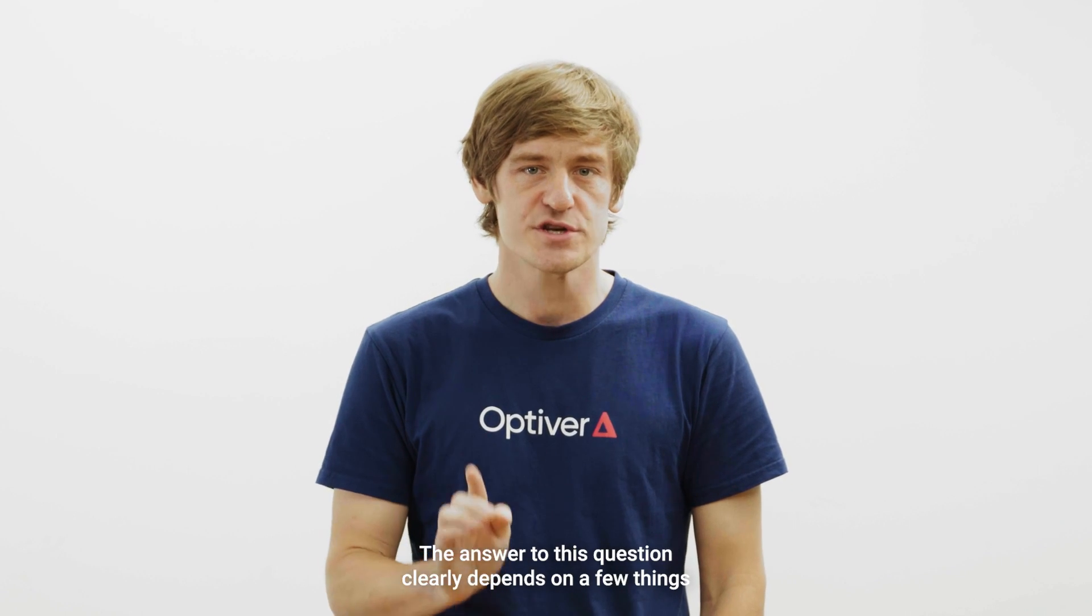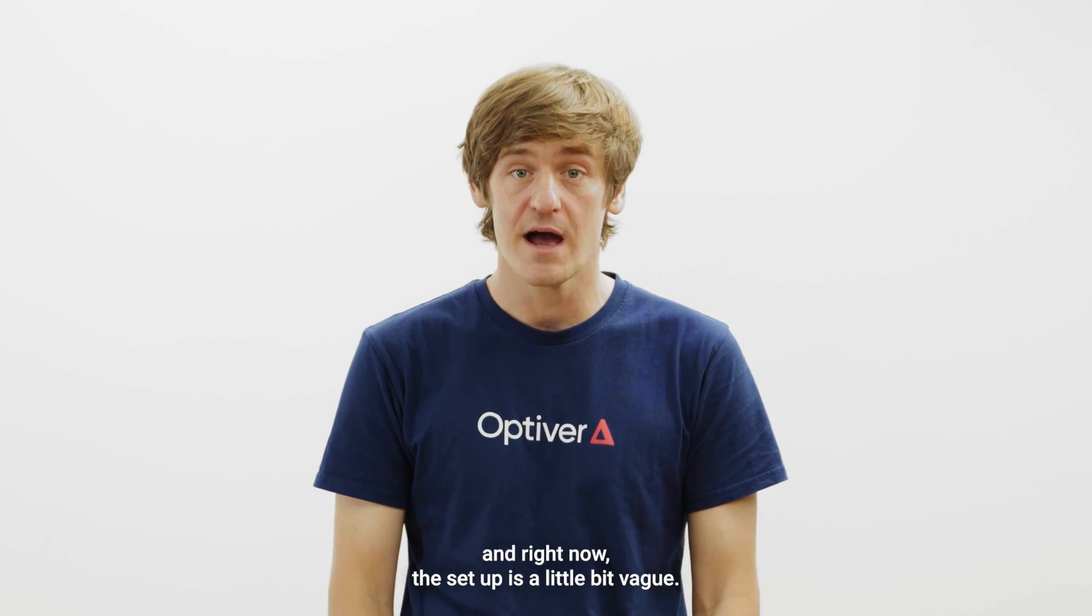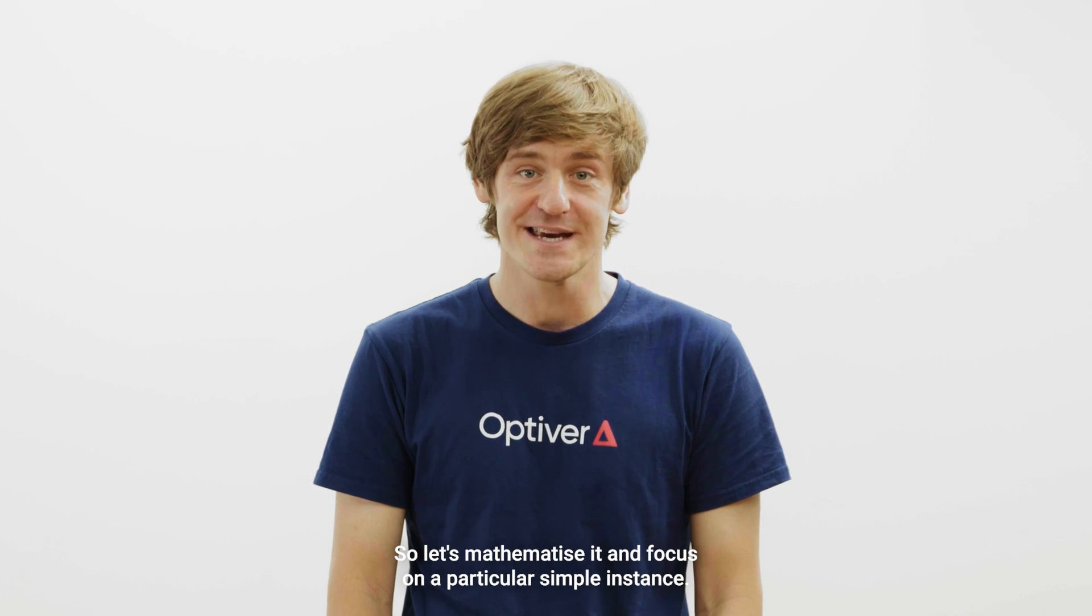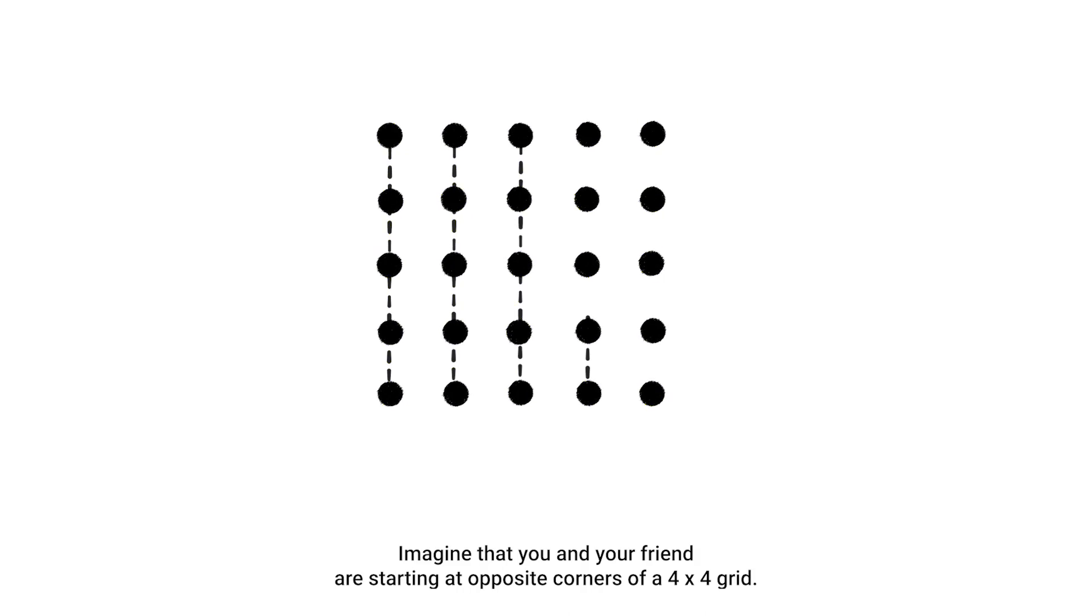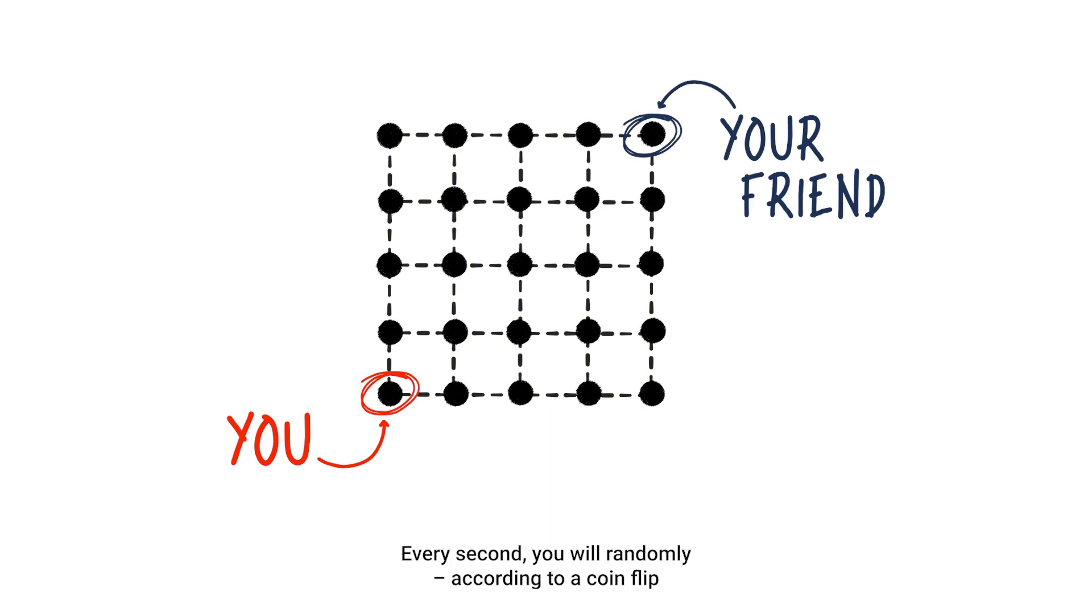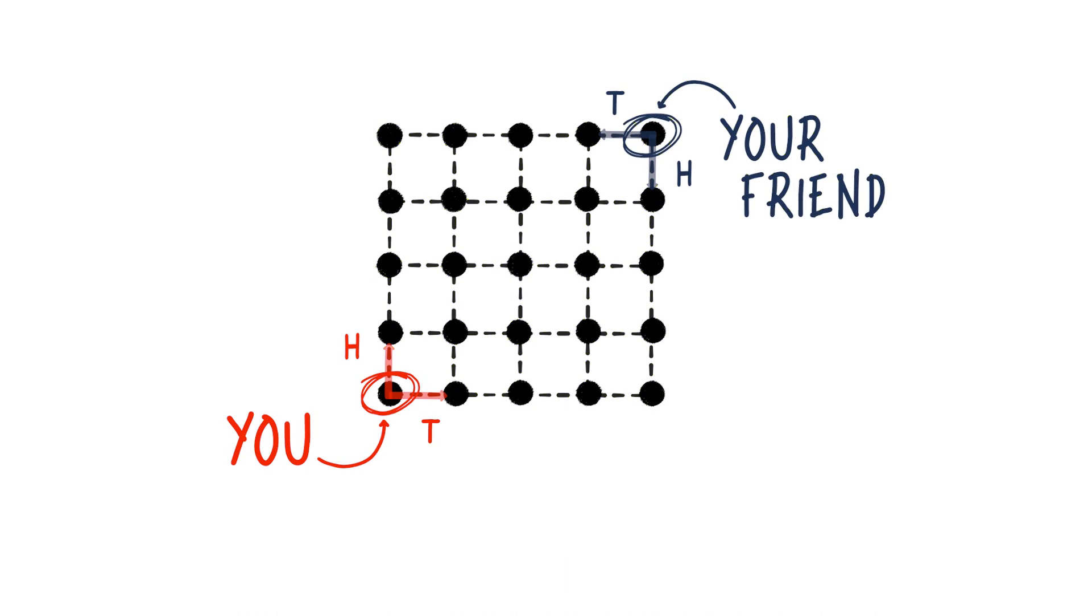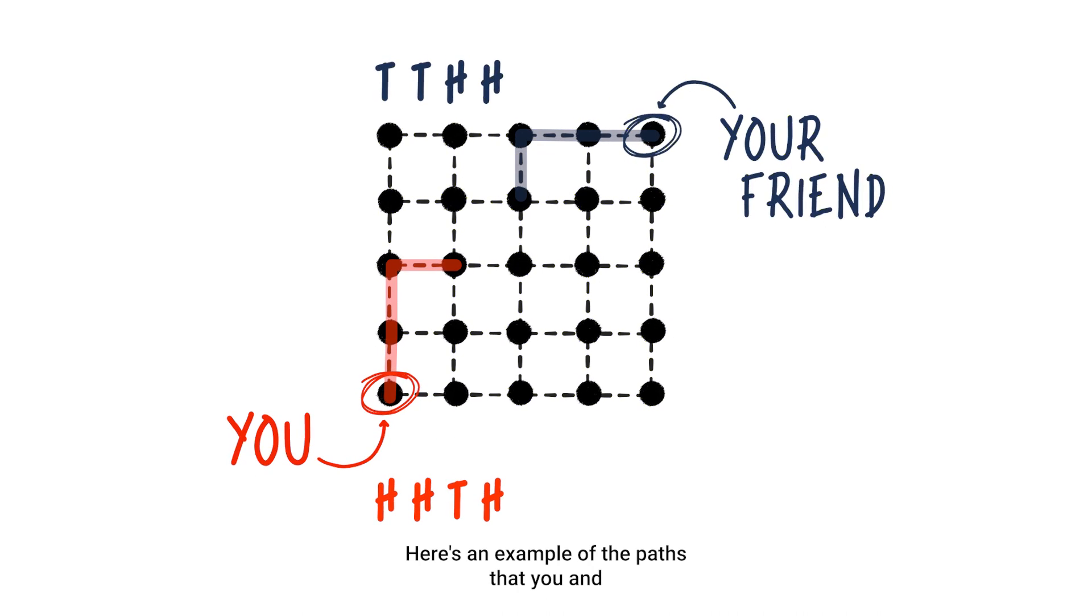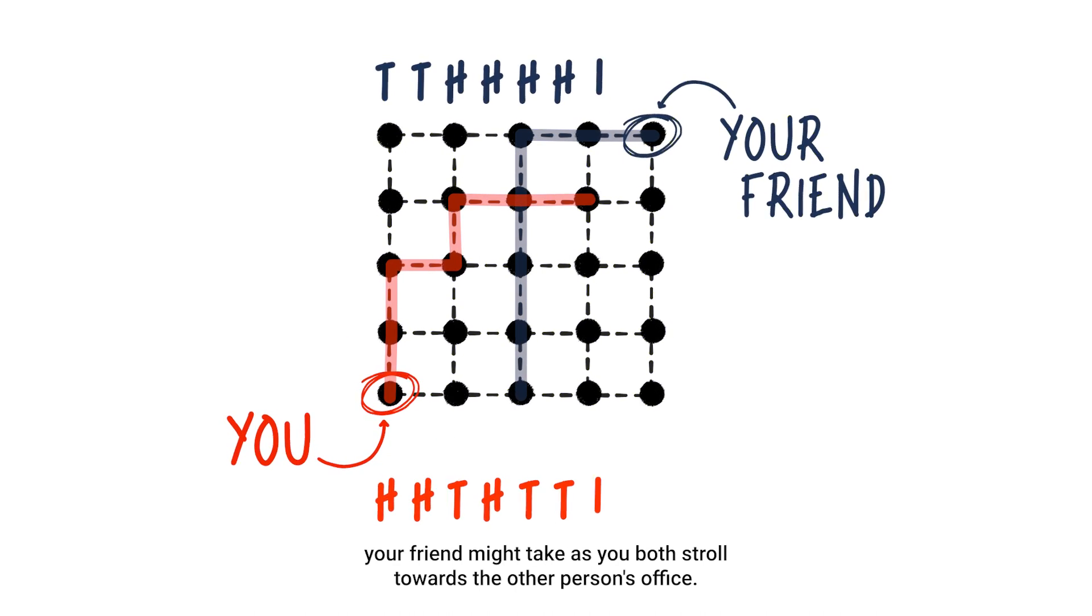The answer to this question clearly depends on a few things, and right now the setup is a little bit vague. So let's mathematize it and focus on a particular simple instance. Imagine that you and your friend are starting at opposite corners of a 4x4 grid. You are at the bottom left and your friend is at the top right. Every second, you will randomly, according to a coin flip, move either right one space or up one space. Also, if you or your friend run into the edge of the grid, then you can only proceed in the remaining available direction.